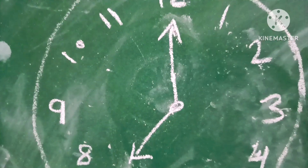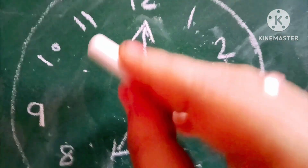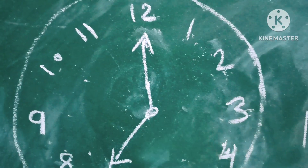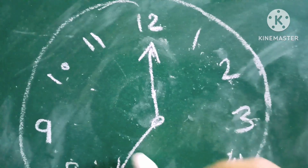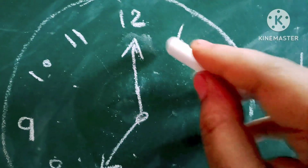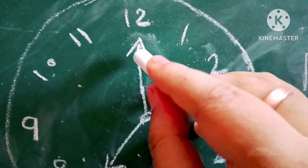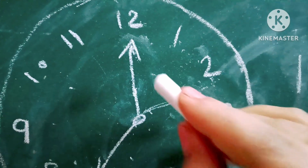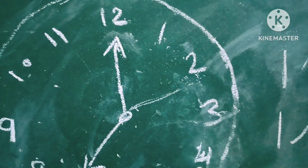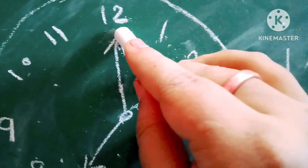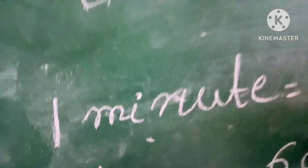The second hand is represented by each tick — it takes one second per tick. Every minute, the second hand completes one full rotation. The second hand goes around once per minute, and that equals one minute. So the second hand completes its rotation and the process repeats.